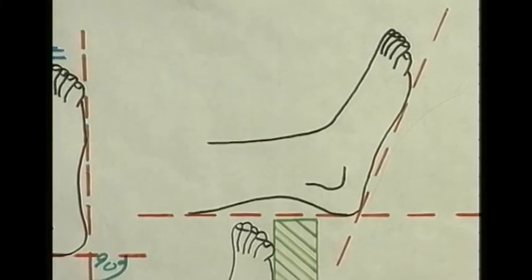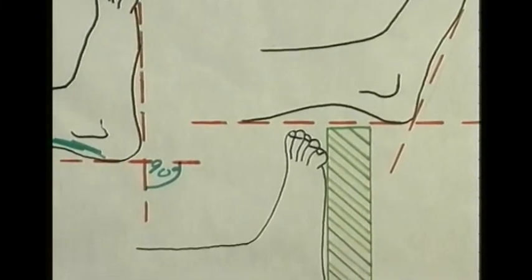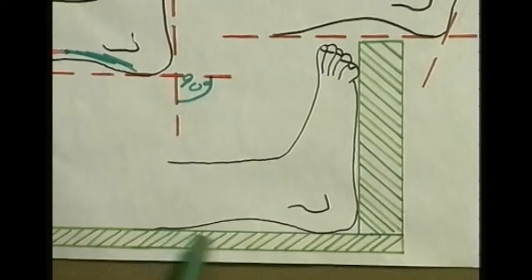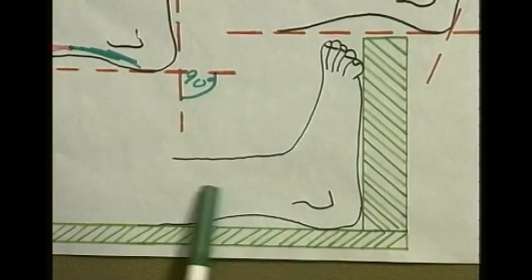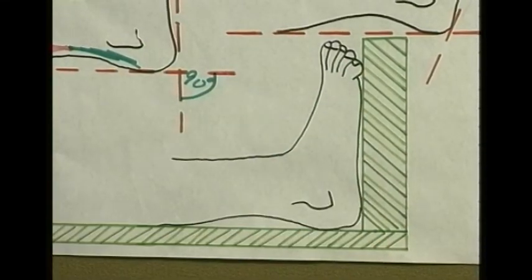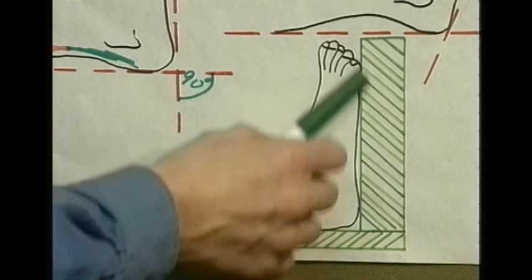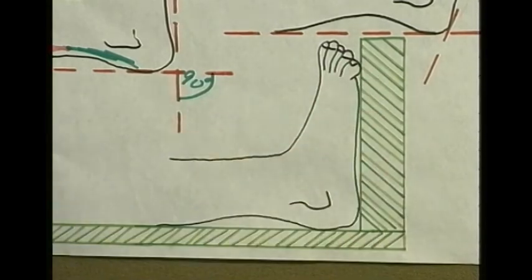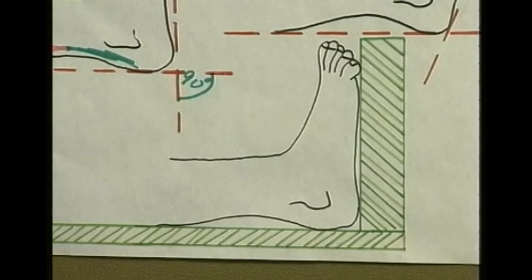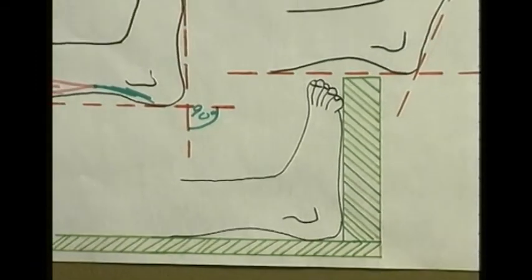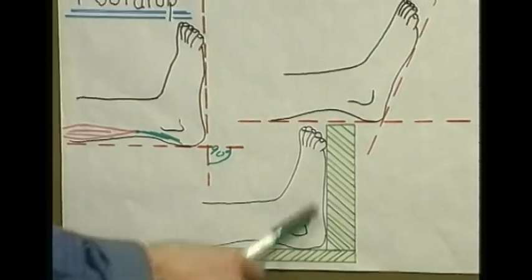One way to prevent foot drop is to maintain the foot at a normal physiological 90-degree angle artificially. You might use a short splint that holds the foot in that position in patients where this may be a particular problem. So foot drop is caused by contraction of the calf muscle, and it is prevented by keeping the foot at a physiological position and by regular movement of the foot through its full range of movements.